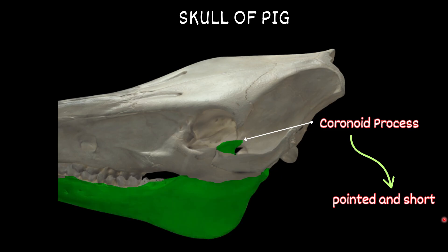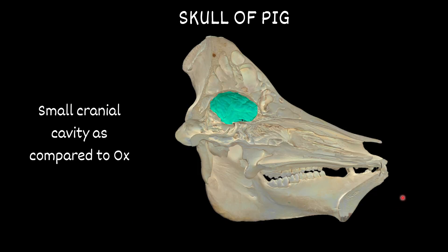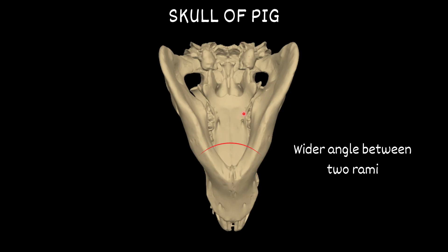The coronoid process is pointed and short. The cranial cavity is very small compared to the ox. There is a wide angle between the two rami.